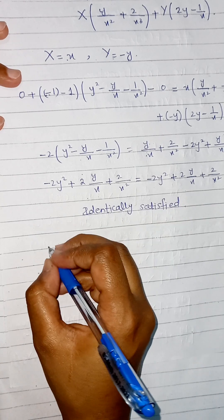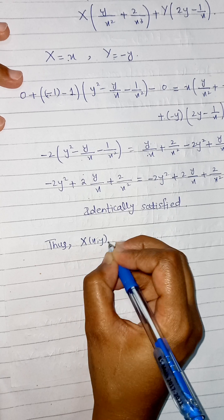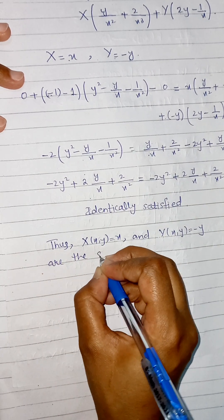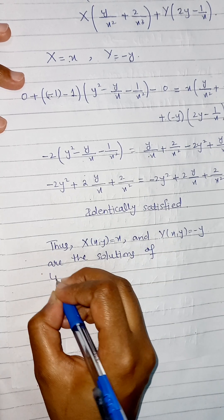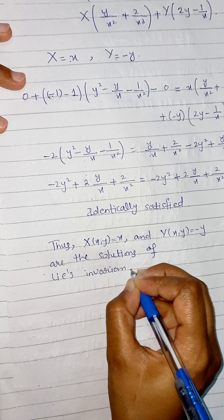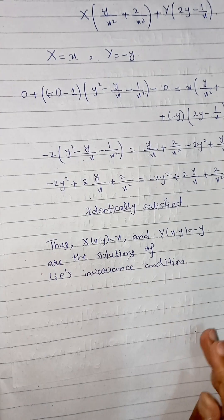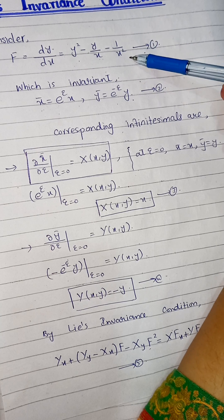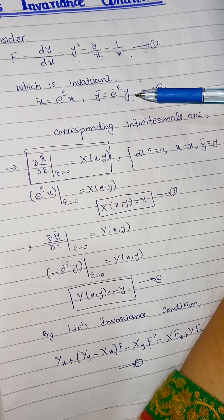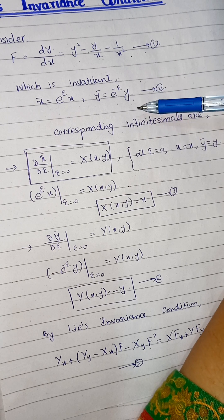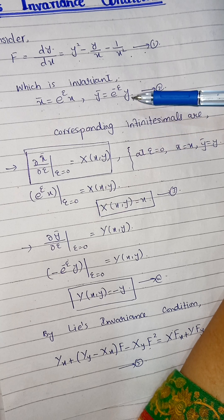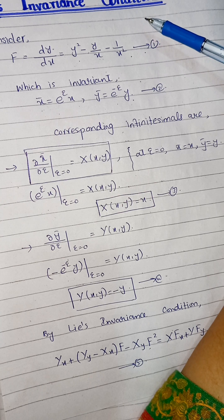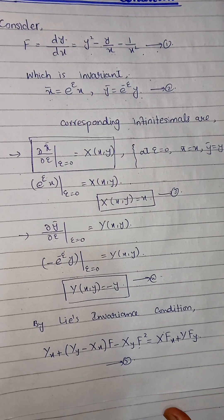Thus, capital X(x, y) equal to x and capital Y(x, y) equal to minus y are the solutions of Lie's invariance condition. In today's lecture we verified that for a given ODE invariant under a given Lie group, we can verify Lie's invariance condition. You can also use this condition to find the infinitesimals for a given Lie group — that is what we will discuss in the coming lectures. Thank you.